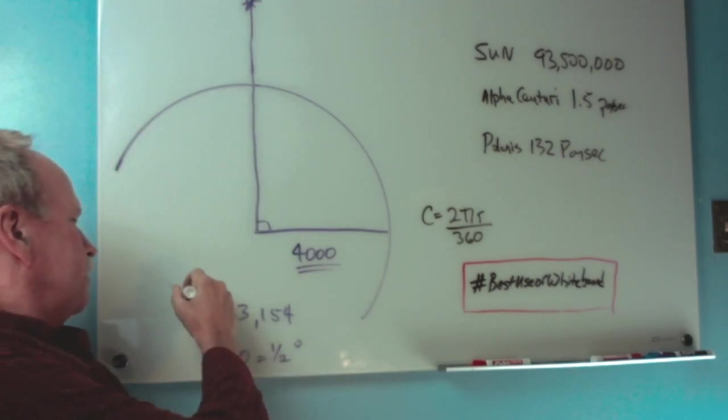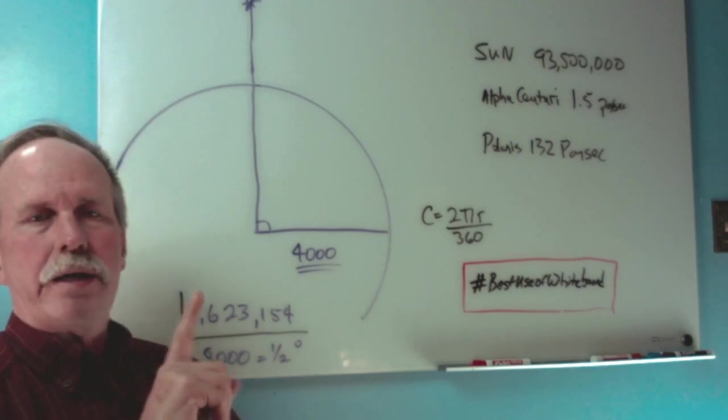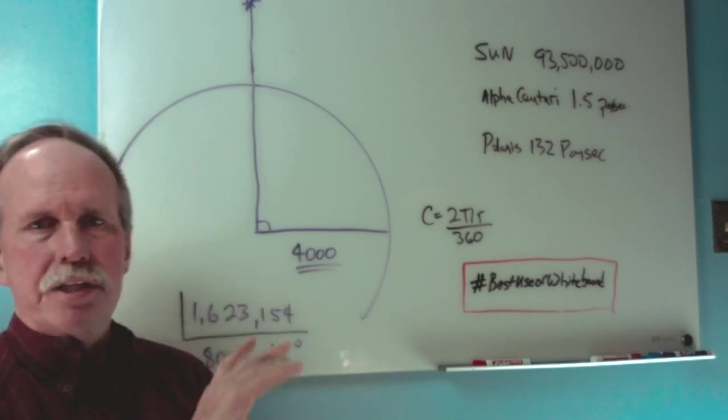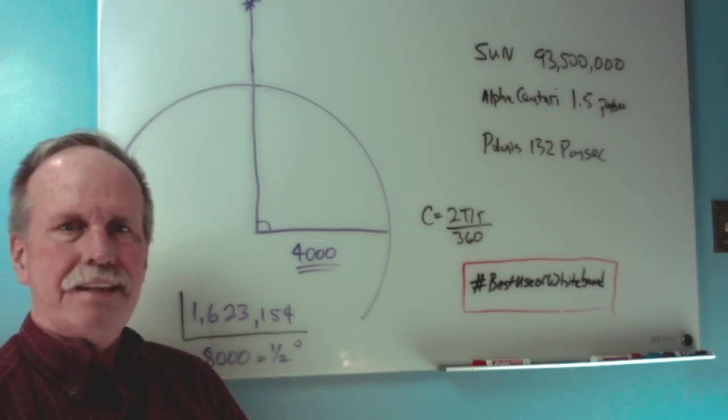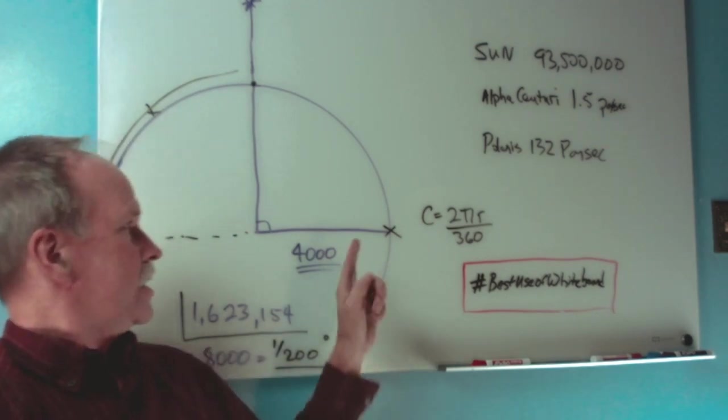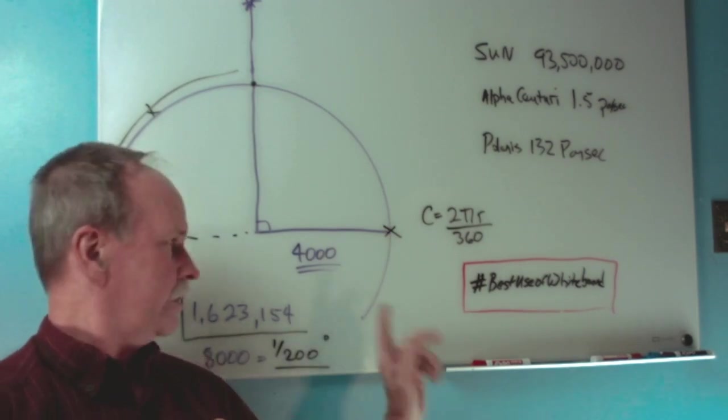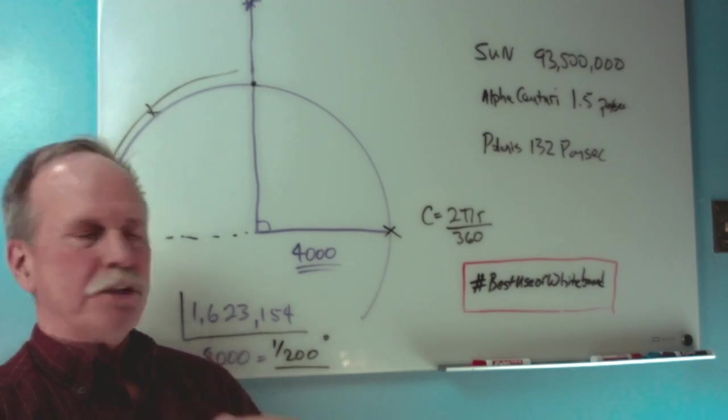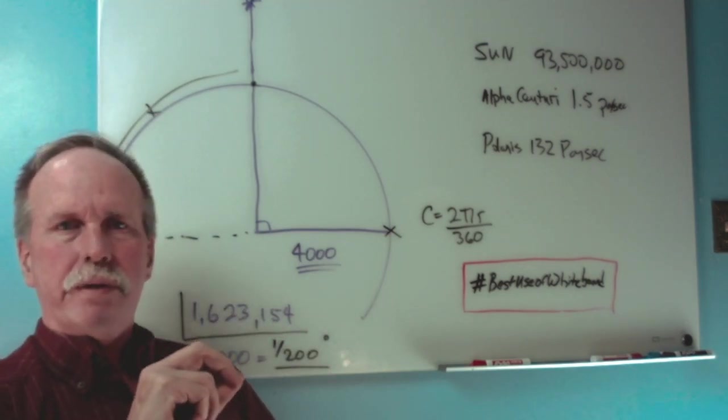That comes up to 1.6 million miles. That's one degree of the Earth's orbit. As you know, the light of the Sun goes out in 360 degrees. What is the diameter of the Earth? Approximately 8,000 miles. So if you were to look at the Sun as a point source of light, the entire diameter of 8,000 miles accounts for about 1/200 of 1 degree of that sunlight. So the difference between here and here is 1/200 of a degree.